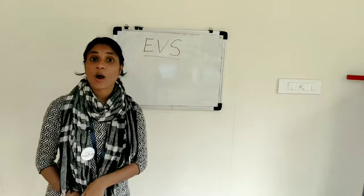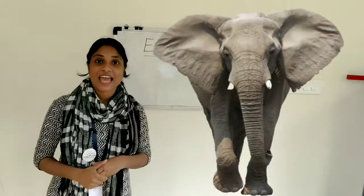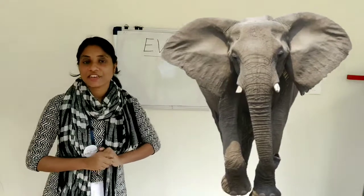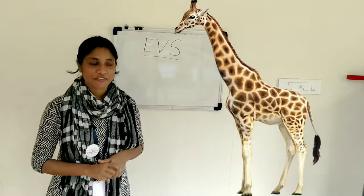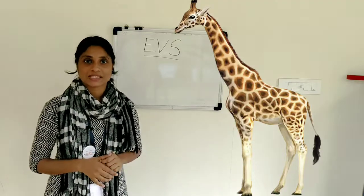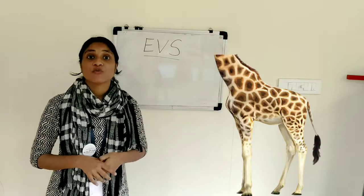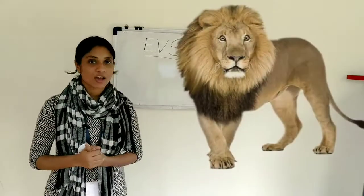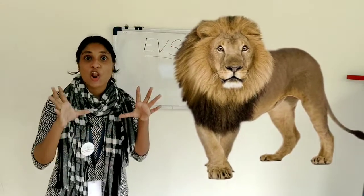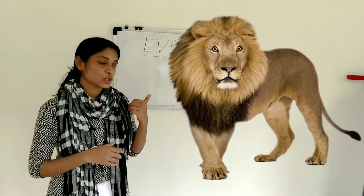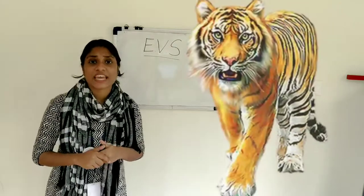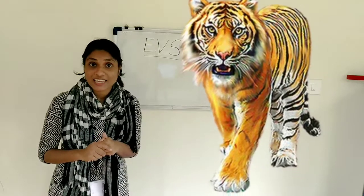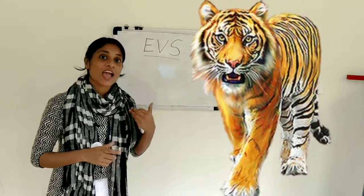Now let's see what are the wild animals. This is elephant. Elephant is a wild animal. Next is giraffe. Giraffe is an example of a wild animal. Now this is lion. Lion lives in the forest, so lion is a wild animal. This is tiger. Tiger is a wild animal.